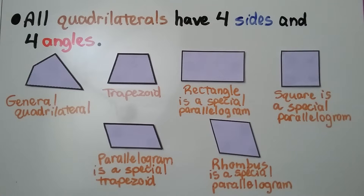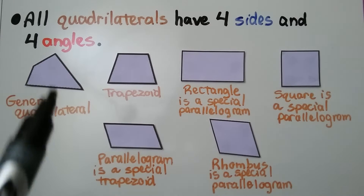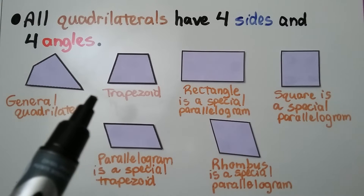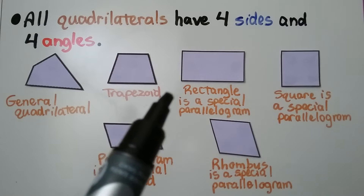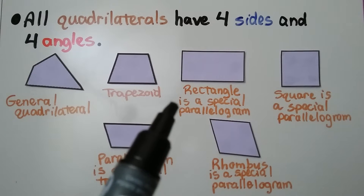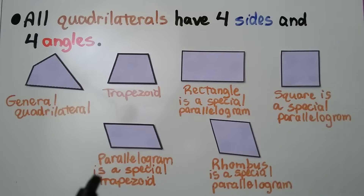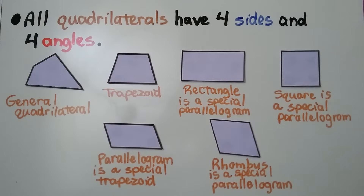All quadrilaterals have four sides and four angles. We have general quadrilaterals that are just a shape with four sides and four angles. We have trapezoids, rectangles which are special parallelograms, squares which are special parallelograms, parallelograms which are special trapezoids, and rhombuses that are special parallelograms. We'll talk about why they're special in a minute.